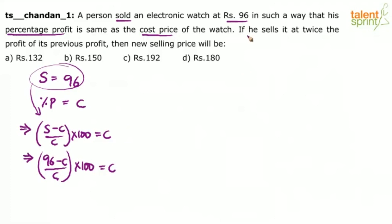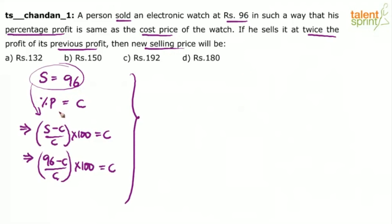Once you get C, you will also get to know the profit. You know the selling price already. After finding the cost price, you can find the profit. He says if he sells at twice the earlier profit, double that profit and find the new selling price. That's the conventional way of solving it. The other way is to go by options if you find solving the quadratic equation complex.